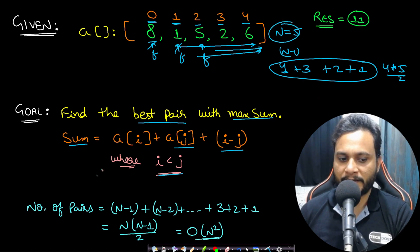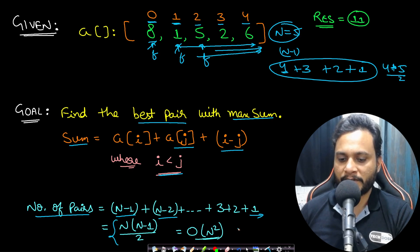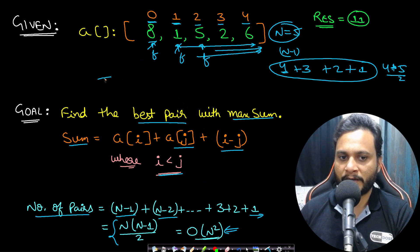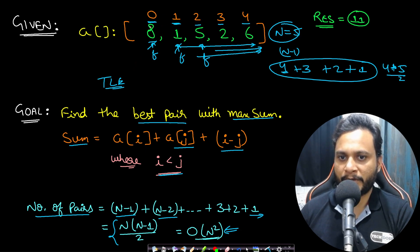Generalizing over n, the total number of pairs is (n-1)+(n-2)+…+1 = n(n-1)/2, which is O(n²). Since the constraints make an O(n²) algorithm give a TLE, we don't have the luxury of comparing every pair.